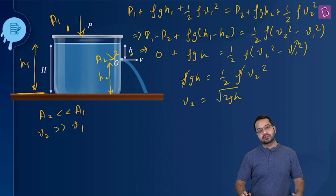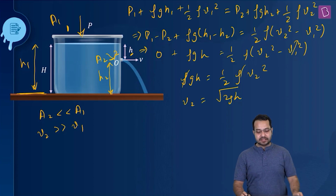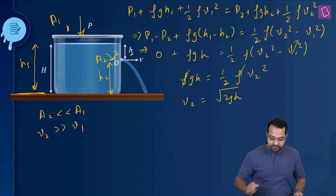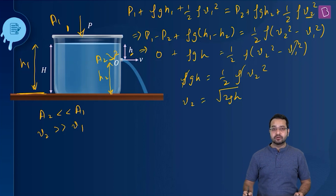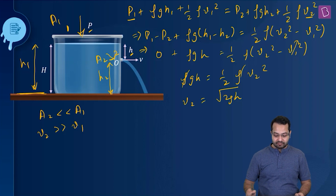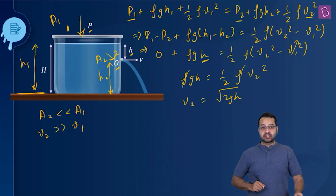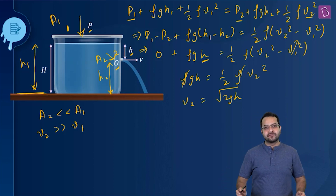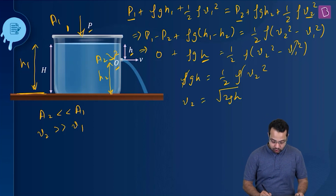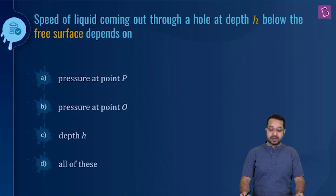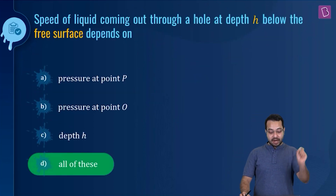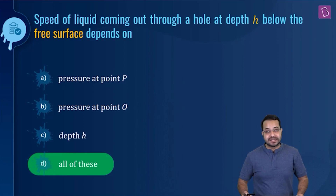Since nothing of that sort is given in the question, the speed of efflux V2 depends on P1 (pressure at the surface), P2 (pressure at the hole), and the depth H below the free surface. Because none of those conditions are specified, the answer has to be all of these — correct option D.